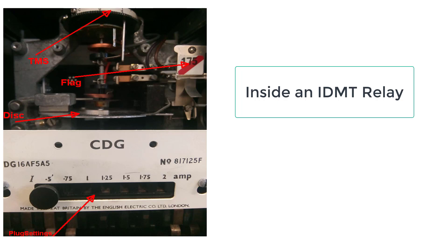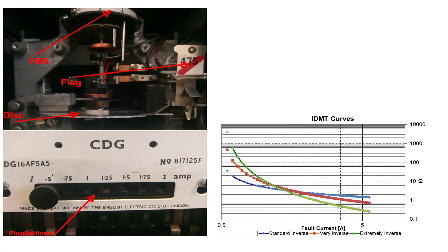Now we know that IDMT relays have three different curves as shown below. We have standard inverse or also called normal inverse, and we have very inverse and extremely inverse characteristic curves.